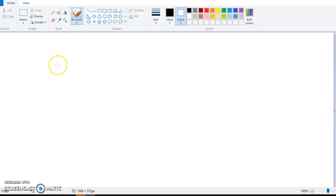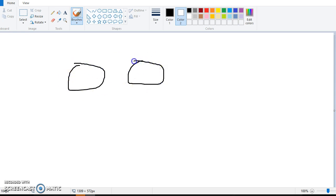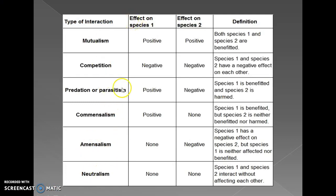Neutralism is zero-zero — neither positive nor negative. Now let us start with the chart. In mutualism, which is a type of positive interaction, there are two species. Species one has a positive impact and species two also has a positive impact — that is why it is plus-plus.